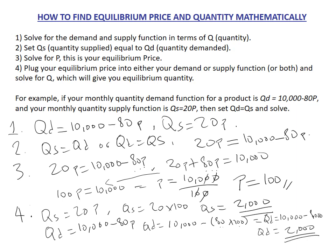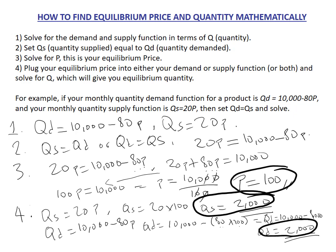Our equilibrium point is where quantity supplied equals quantity demanded, and you can see that here. At equilibrium, our price is 100, our quantity supplied is 2,000, and our quantity demanded is 2,000. Solved.